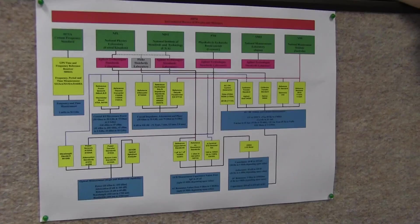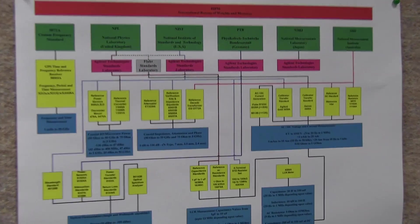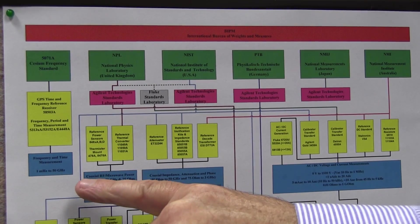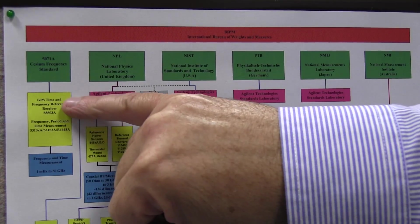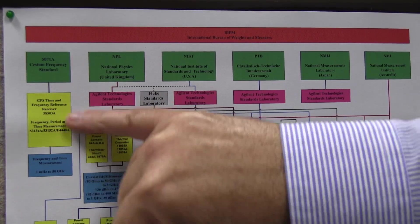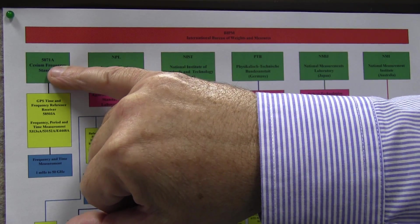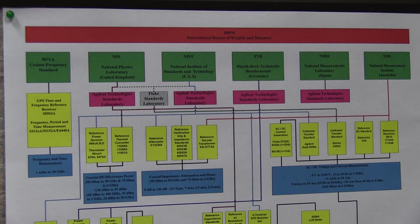So if we look at frequency and time measurements, we can go from 1 megahertz to 50 gigahertz with traceability. And if we look over this side of the chart here, our time and frequency system is traceable to our primary standards at our 5071.